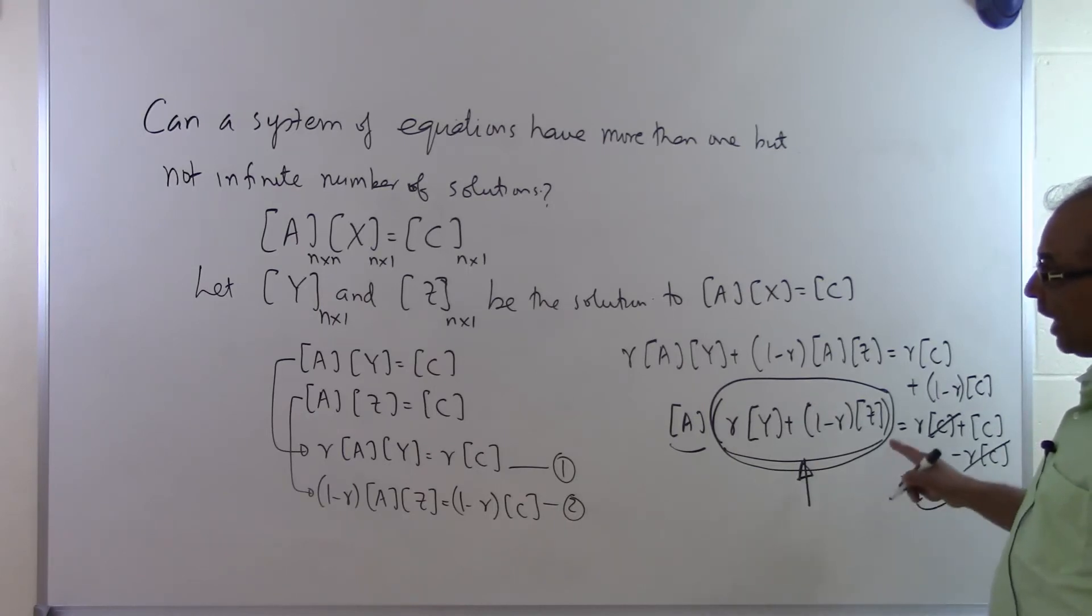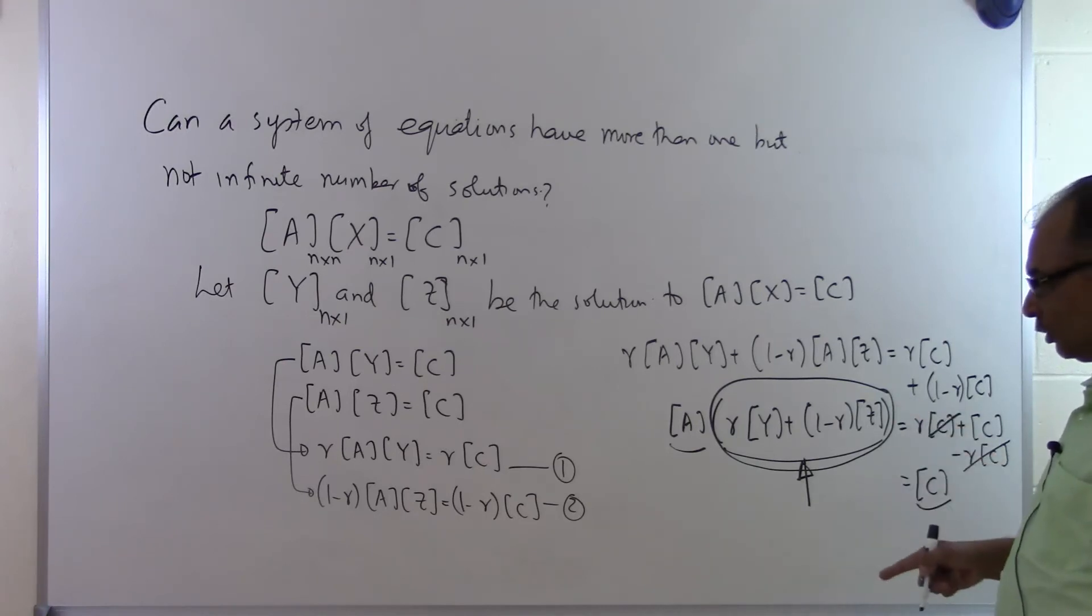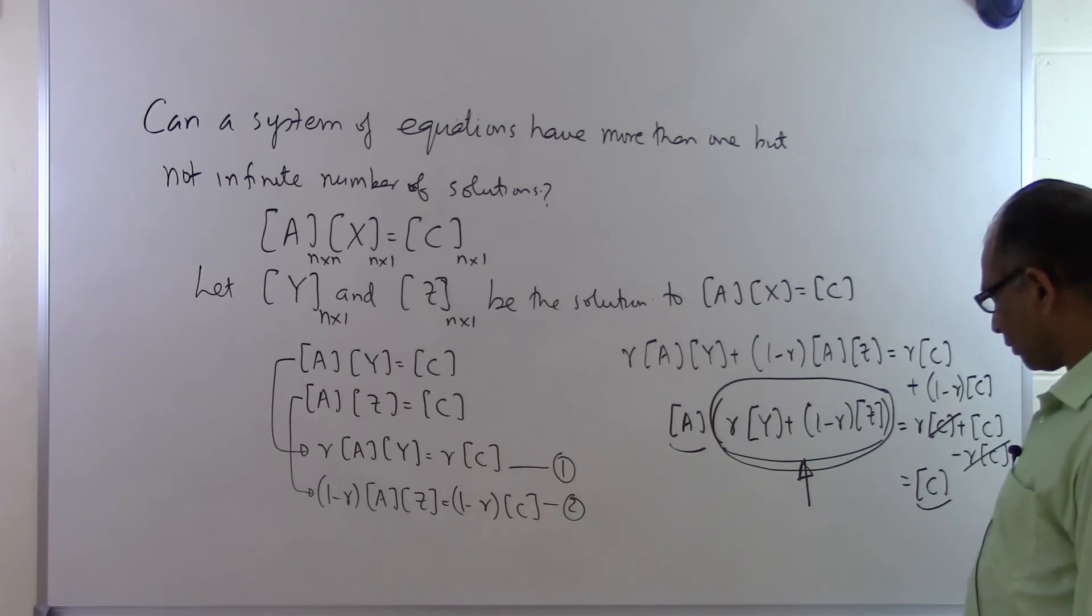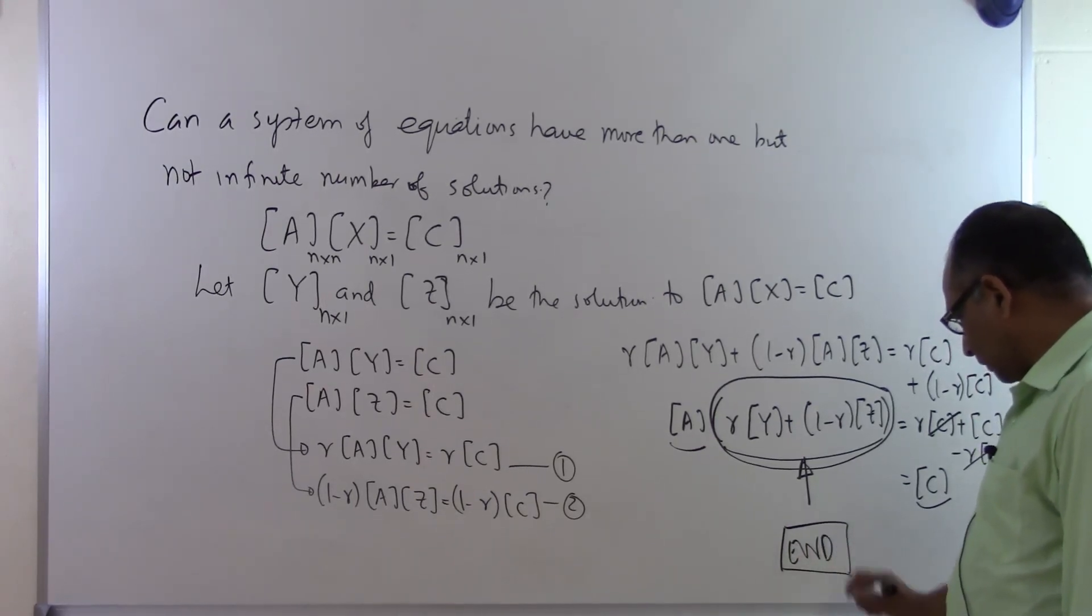So that's why it's not possible to have finite number of solutions which is a number greater than 1. You can have no solution, unique solution, and infinite solutions. You cannot have 2 solutions, 3 solutions, 4 solutions or any finite number other than 0 or 1 when somebody is telling you to solve N equations and N unknowns. And that's the end of this proof and that's also the end of this segment.